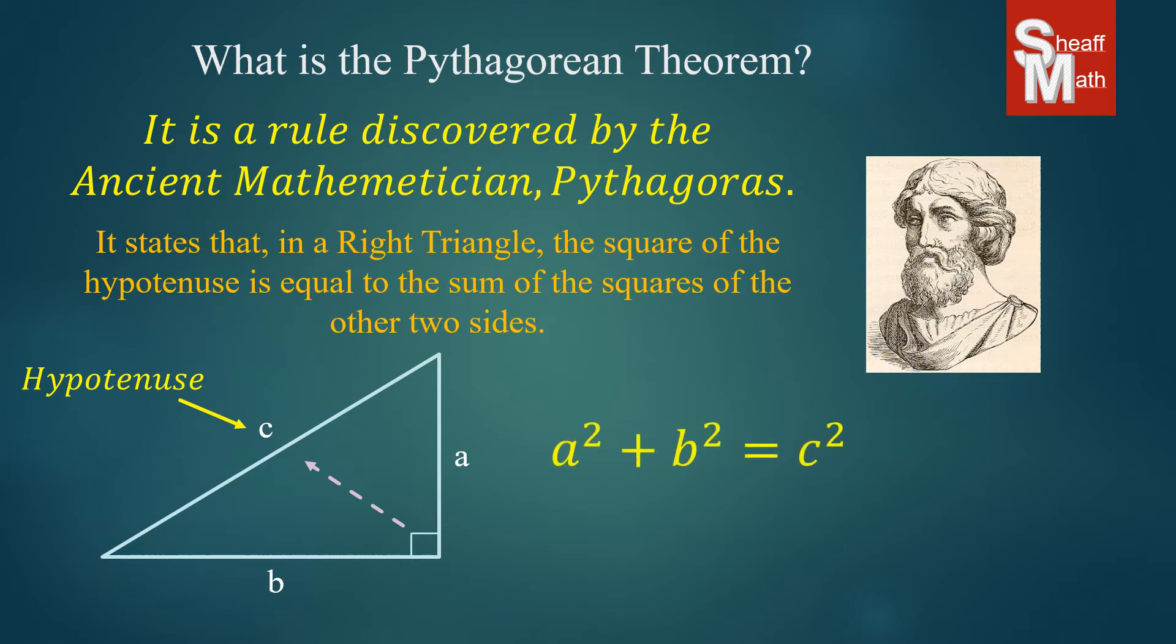So here is the actual Pythagorean theorem. And what it states is that if you square side A and square side B and add them together, that it will always equal the square of the hypotenuse C. And it works on every single right triangle. It's really an amazing discovery and can help in so many different ways.